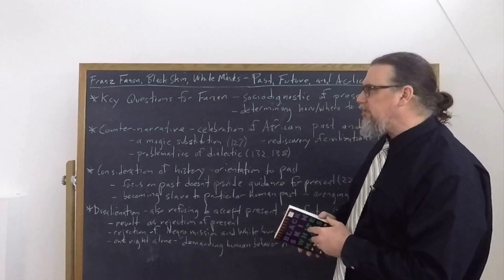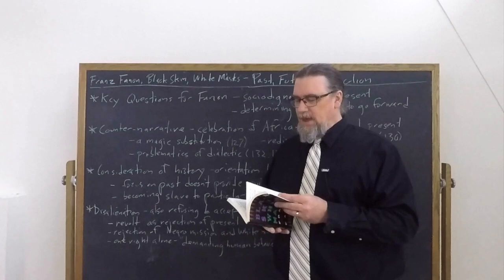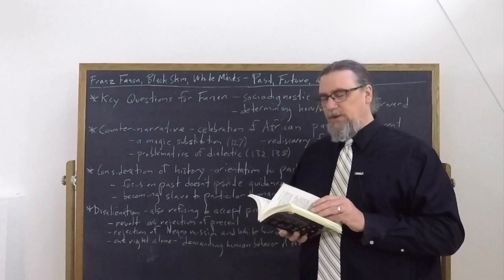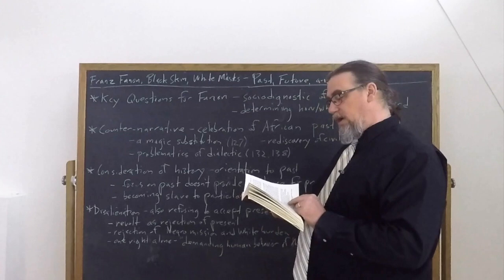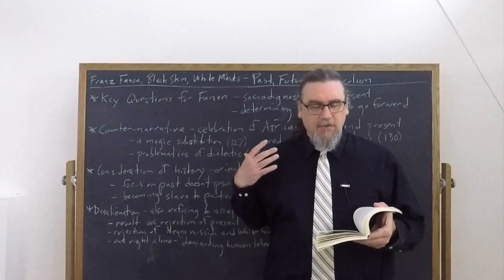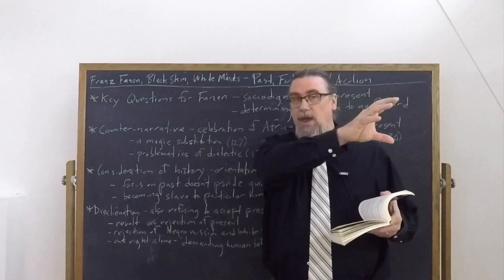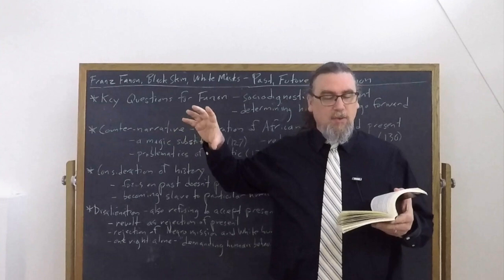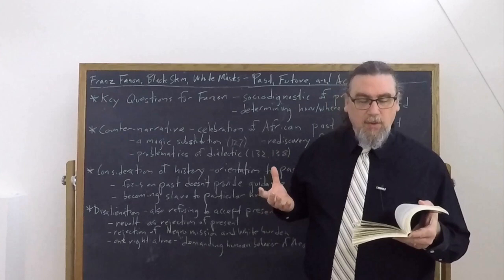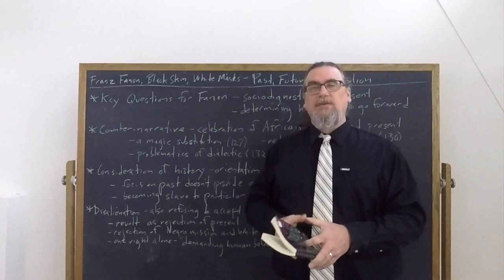And he's got these phrases. He talks about magic at a couple different points. And I think this is quite an apt way of discussing things. So he talks about reading Leopold Senghor and the importance of rhythm and the experience of thinking about this. He says, had I read that, right? I read it again with redoubled attention from the opposite end of the white world. A magical Negro culture was hailing me. Negro sculpture. I began to flush with pride. Was this our salvation? I had rationalized the world and the world that rejected me on the basis of color prejudice. Since no agreement was possible on the level of reason, I threw myself back towards unreason.